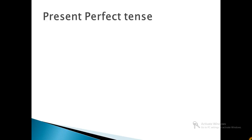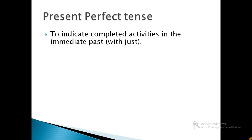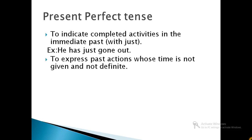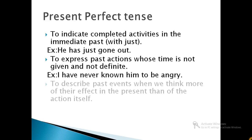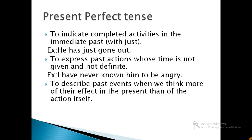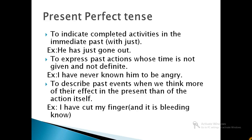The next one, present perfect tense. It is used to indicate completed activities in the immediate past. For example, she has just gone out. It is also used to express past actions whose time is not given and not definite. For example, I have never known him to be angry. This is also used to describe past events when we think more of their effect in the present than of the action itself. For example, I have cut my finger and it is bleeding now. Present perfect tense is also used to denote an action beginning at some time in the past and continuing up to the present moment. For example, I have known him for a long time.